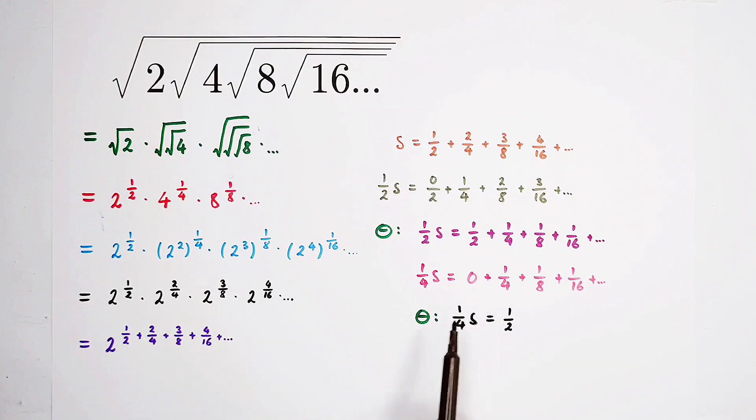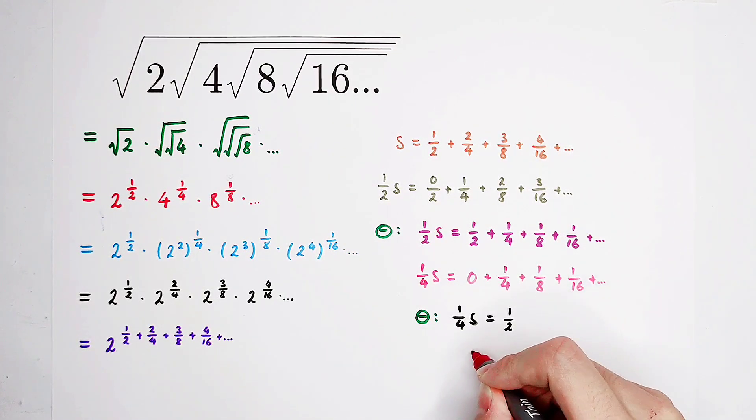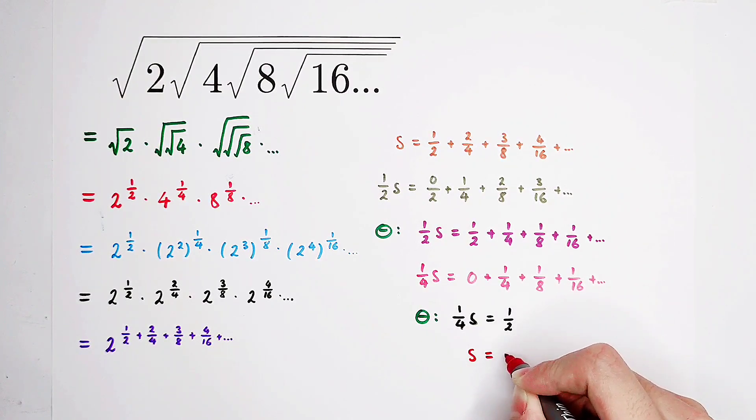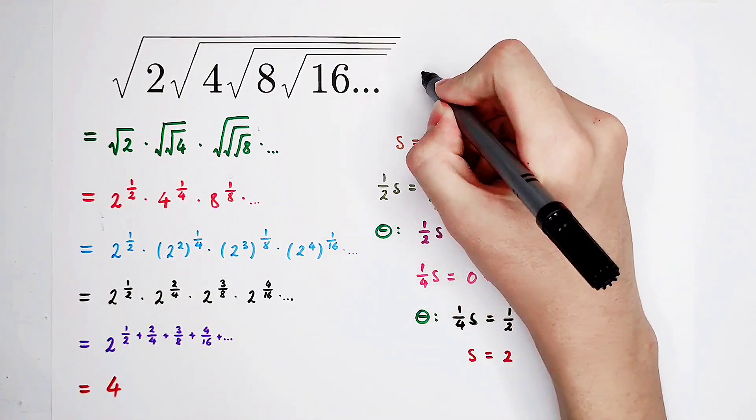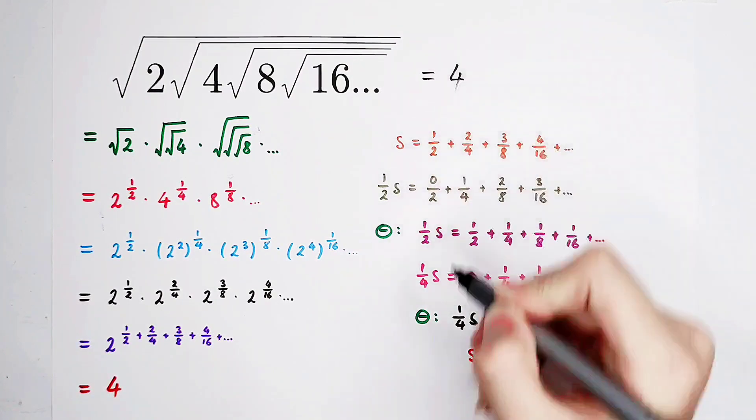Solve this equation, and we will get s is equal to, what? 2, of course. So now, that means it is 2 to the power of 2. 2 to the power of 2 is 4. The answer is 4!